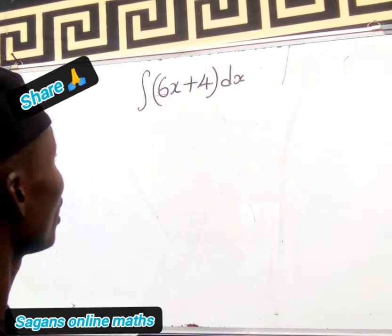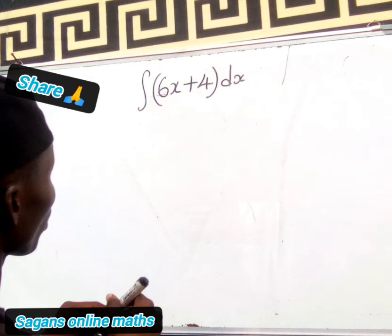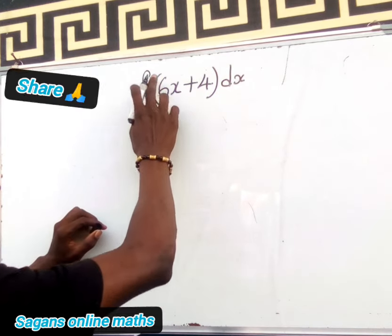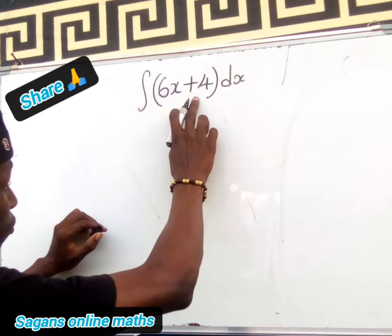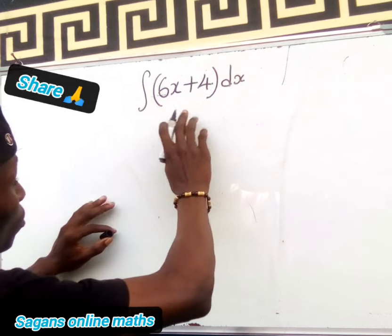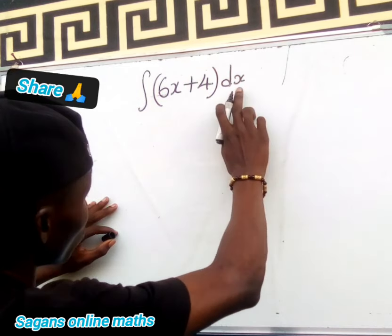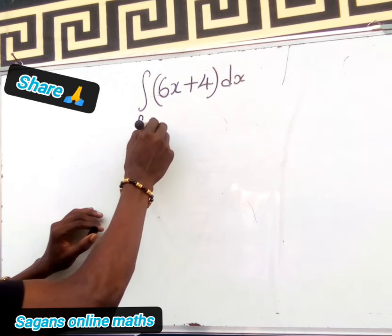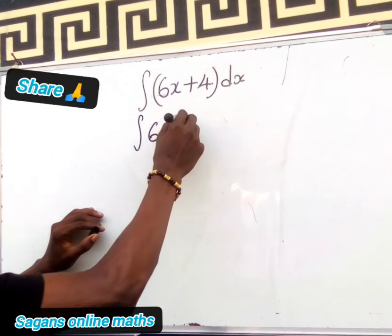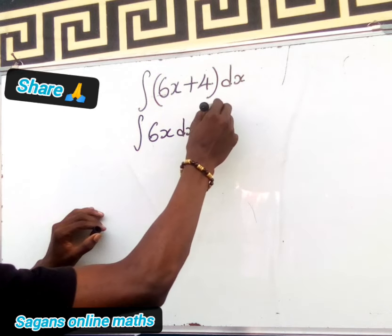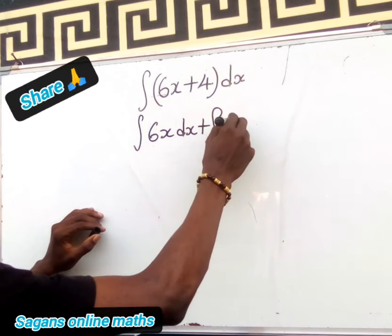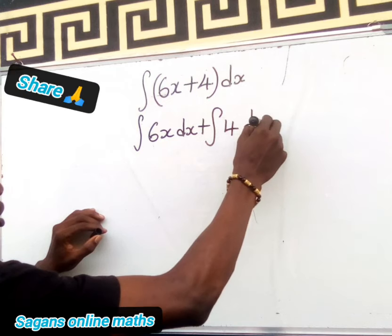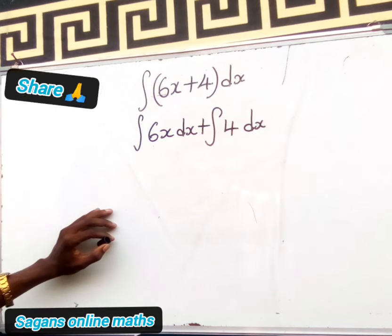Let's integrate this function. We are integrating this function with respect to x. So I can also write the integral of 6x plus 4 dx. Remember that we are integrating this with respect to x, so this becomes the integral of 6x dx plus the integral of 4 dx.